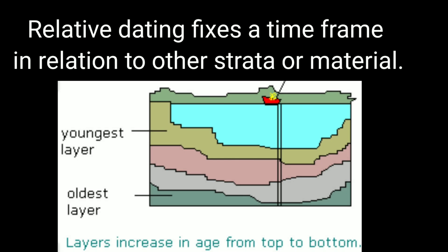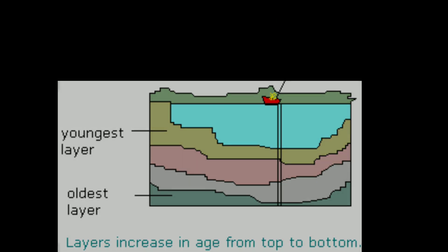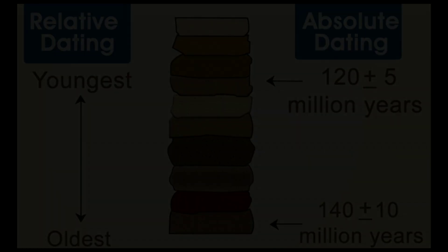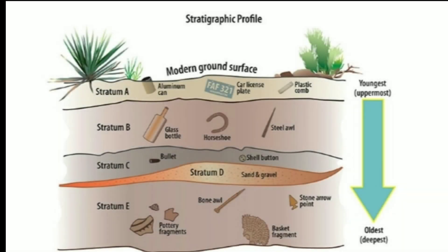The two main types of dating methods are relative dating and absolute dating. Relative dating fixes a timeframe in relation to other strata or material; it can only define the antiquity in terms of older or younger. These methods cannot tell the exact age of an object in number of years. Before the advent of absolute dating methods in the 20th century, nearly all dating was relative.